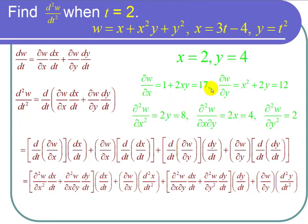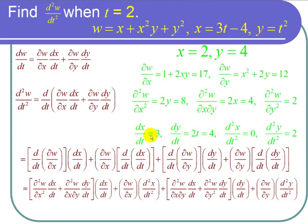Now let's find the derivatives of x and y with respect to t. dx over dt equals 3. dy over dt equals 2t, and at t equals 2 that's 4. The second derivative of x with respect to t is 0. The second derivative of y with respect to t is the derivative of 2t, which is 2.